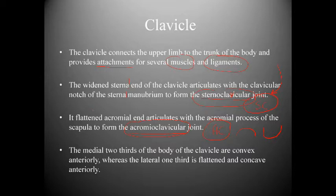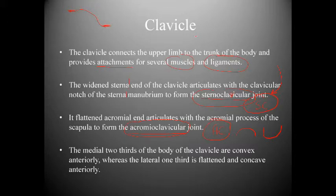The medial two-thirds of the body of the clavicle are convex anteriorly, meaning they curve outward, whereas the lateral one-third is flattened and concave anteriorly. You can actually feel and trace your own clavicle to appreciate this curvature.